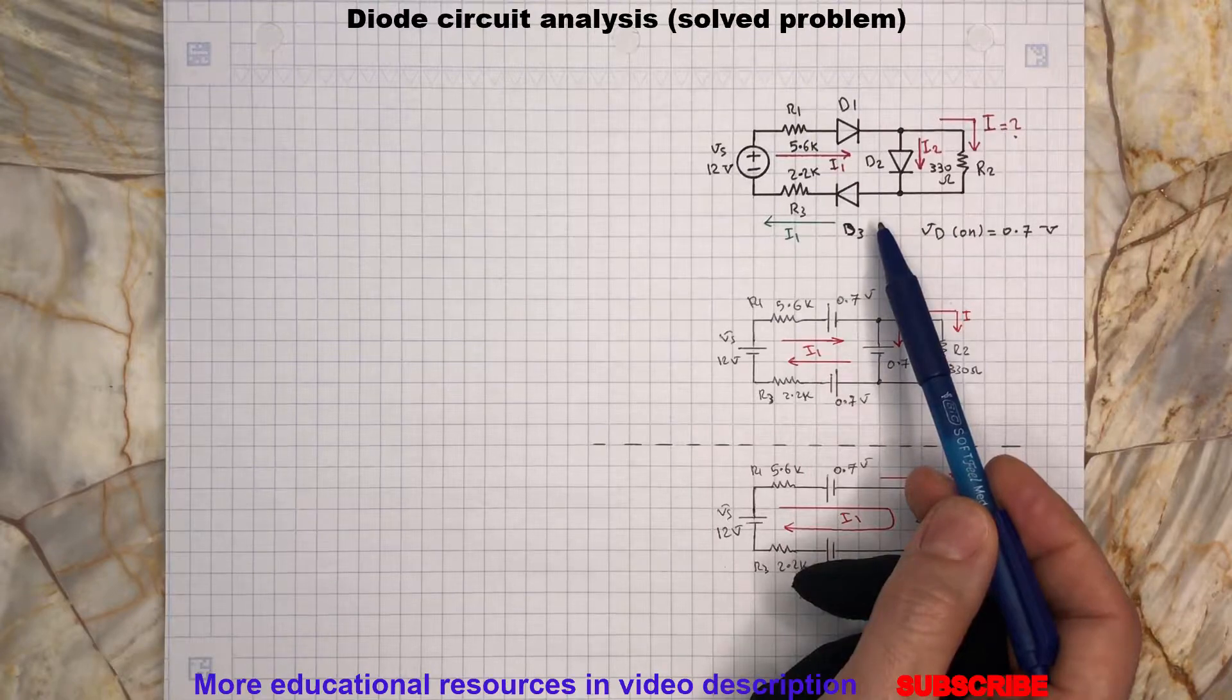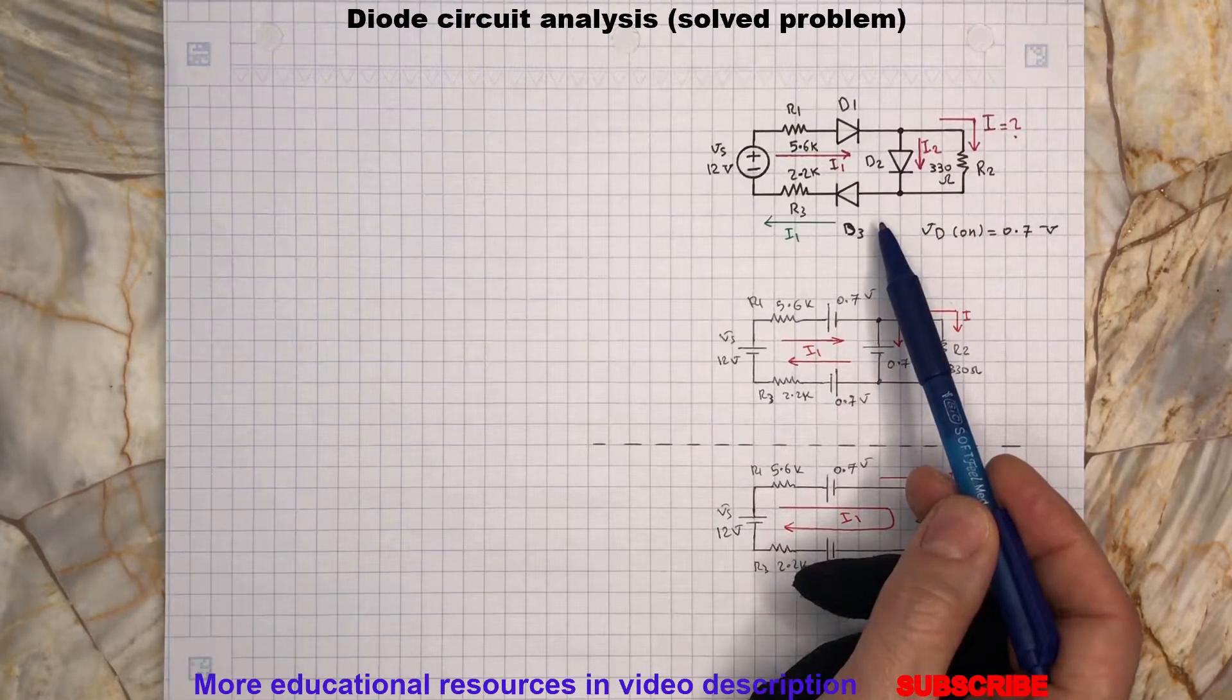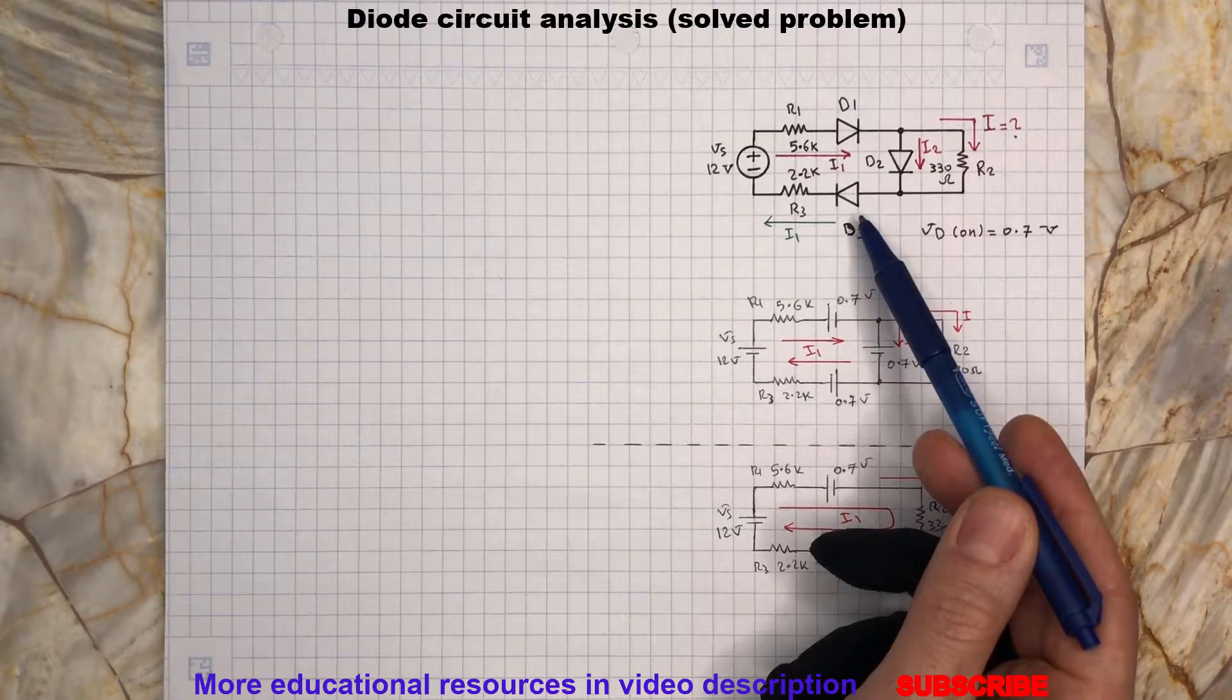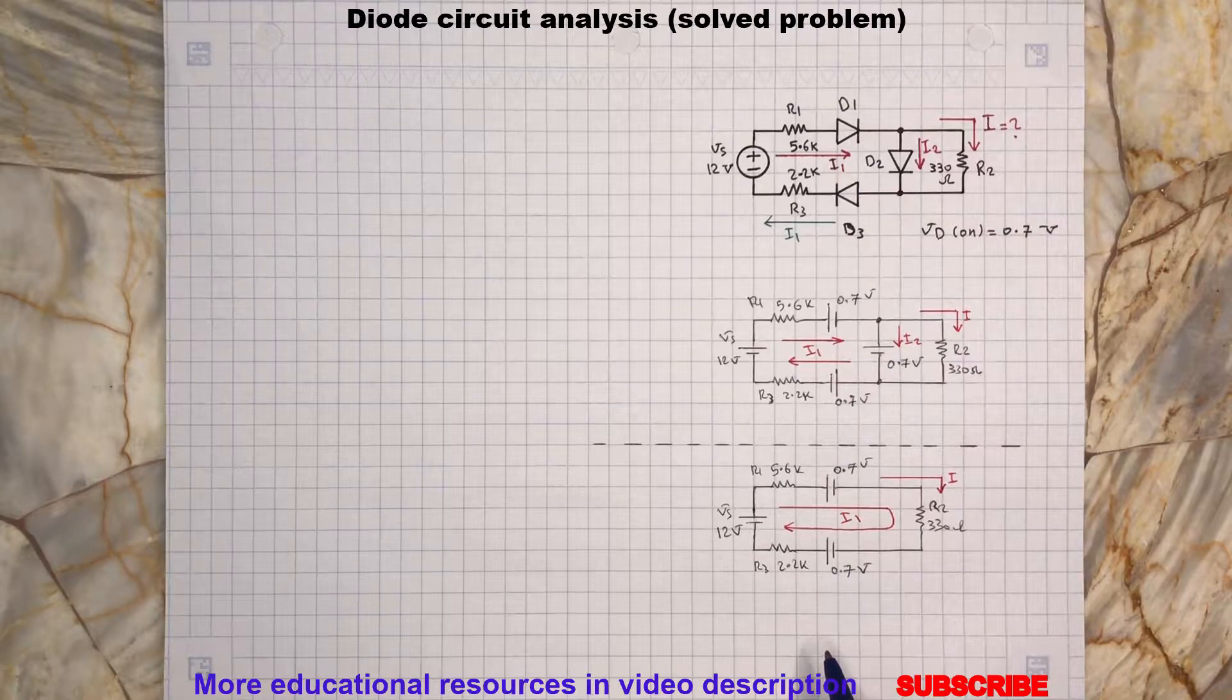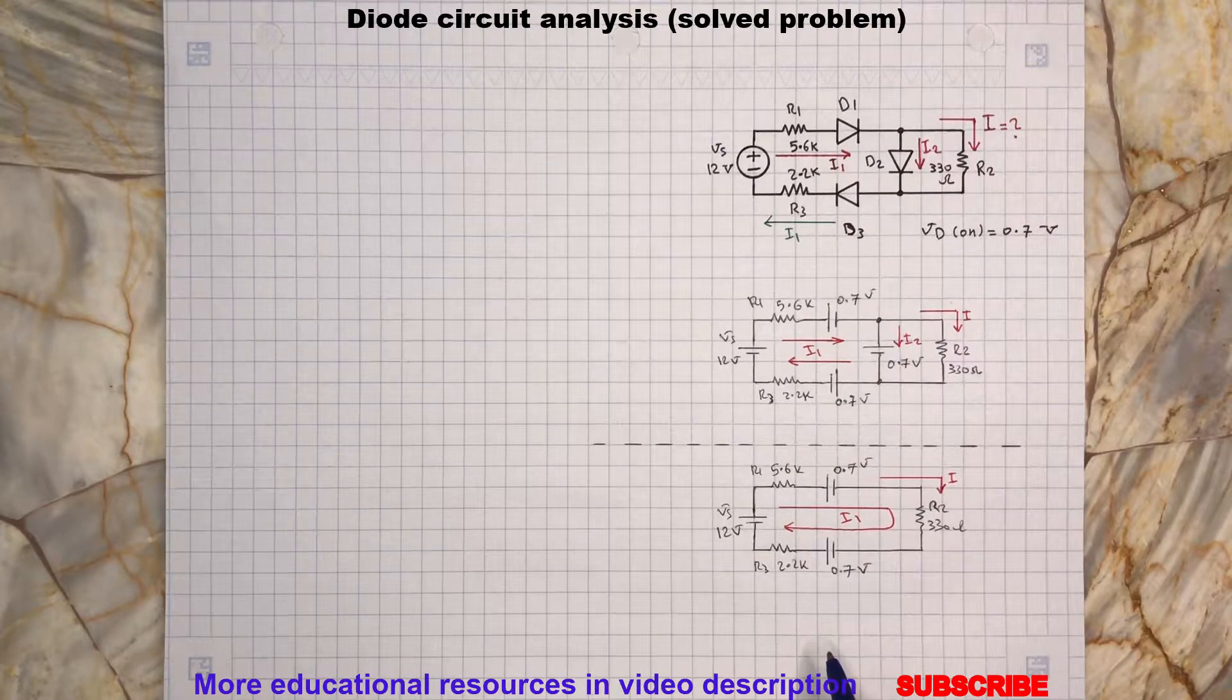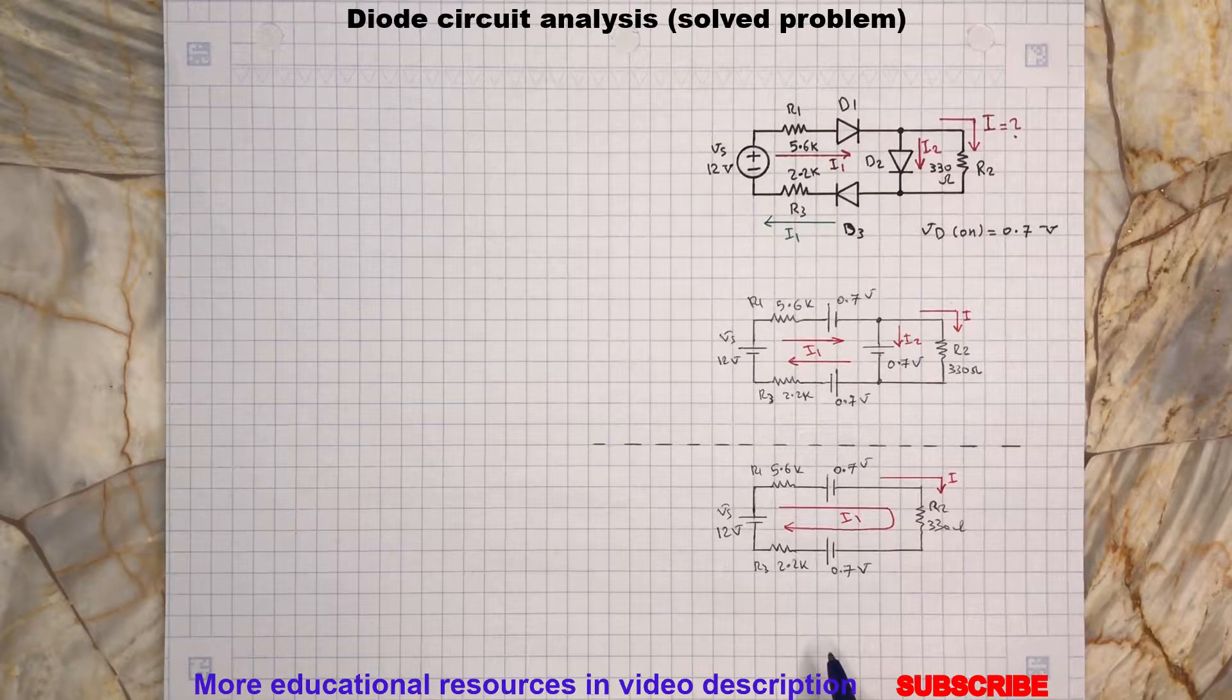For D1 and D3, we can assume they are on because of the Vs positive and negative polarity and the way the diodes D1 and D3 are connected to the source. To start, let's assume all the diodes are on and we find the currents I1, I2, and I in each branch, then we evaluate our results.